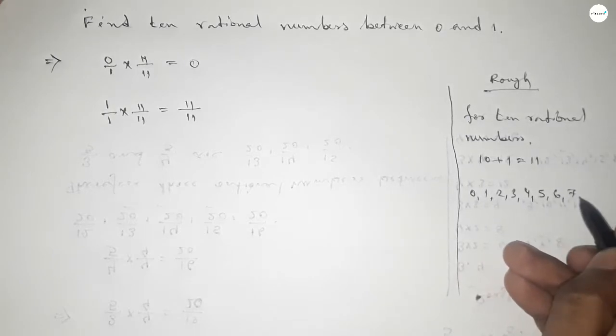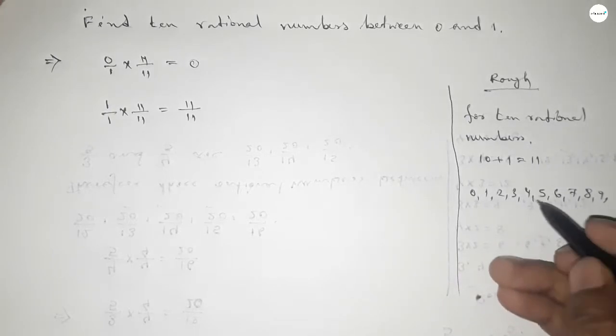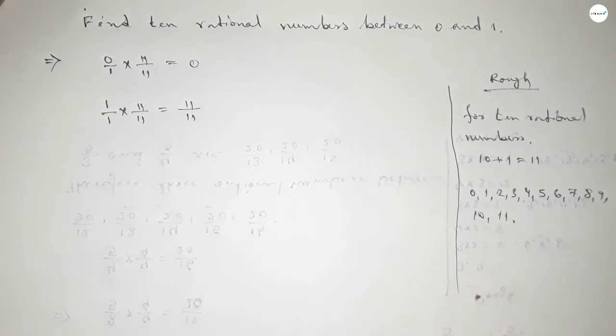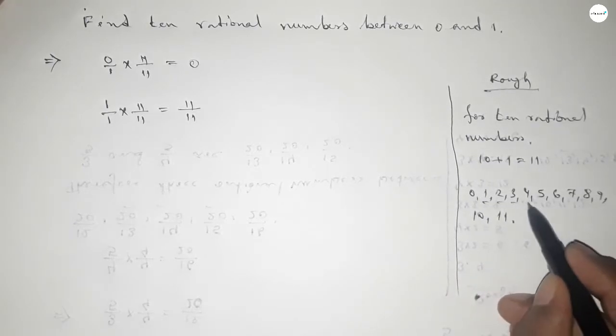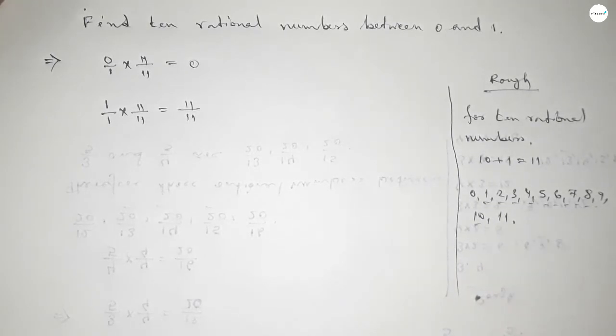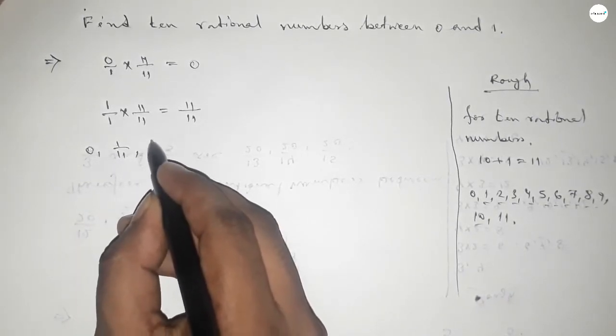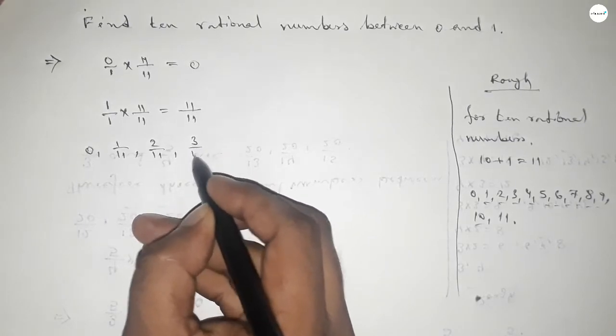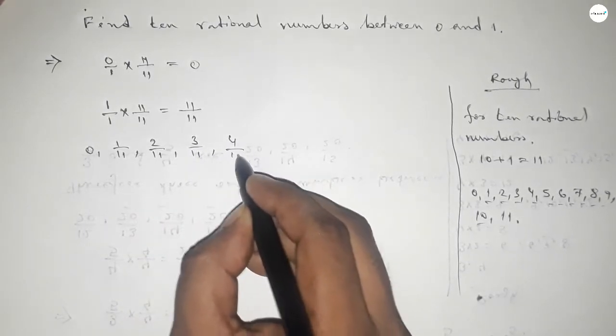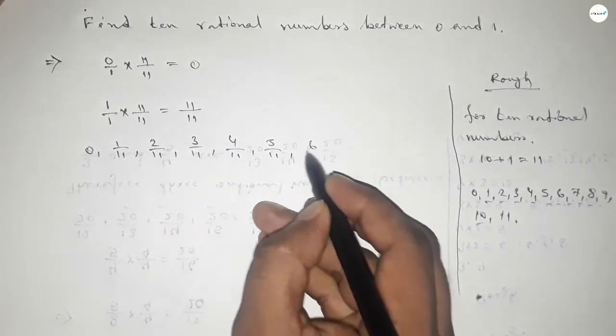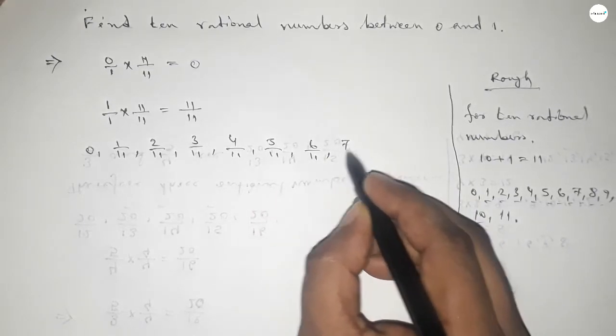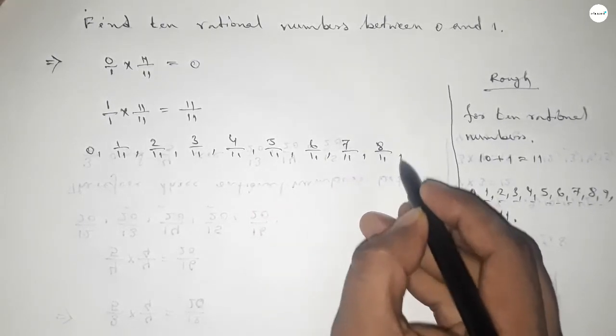And by these natural numbers we can form 10 rational numbers. Okay, so here all the rational numbers are: 0, 1 over 11, 2 over 11, 3 over 11, 4 over 11, 5 over 11, 7 over 11.